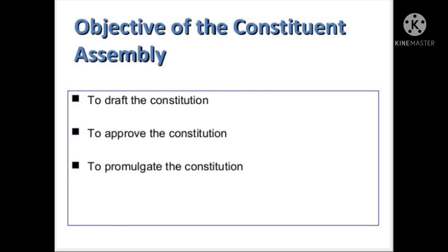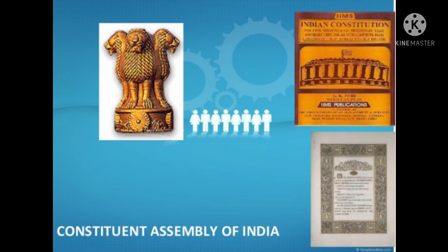The first objective was to draft the Constitution. The next one was to approve the Constitution. The third objective is to promulgate the Constitution. These three objectives were the basis on which the Constituent Assembly was set up, as per our syllabus.